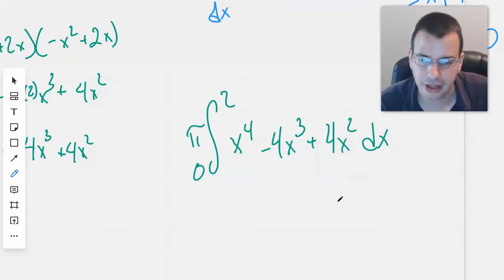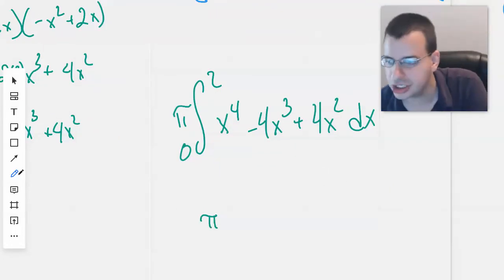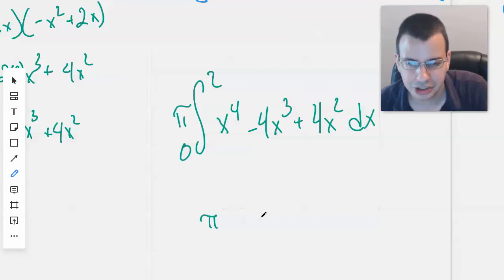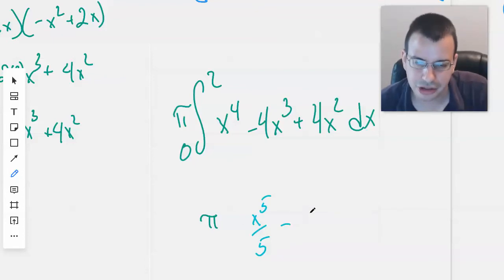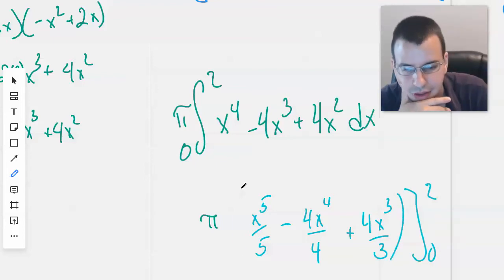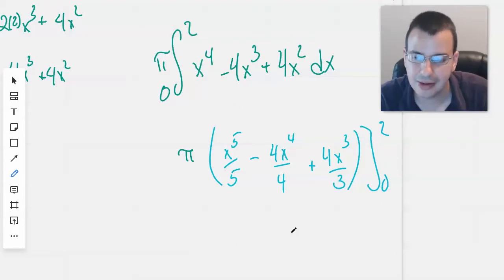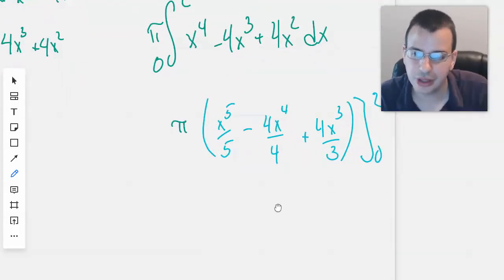Zoom in. Move down. We have pi. Change colors. Pi shouldn't change colors midstream. I don't know. Are they colors similar to horses? Maybe. Maybe not. There we go. 4x cubed over 3. And this will be evaluated from 0 to 2. And then put a little parenthesis so we know everything is multiplied by pi.